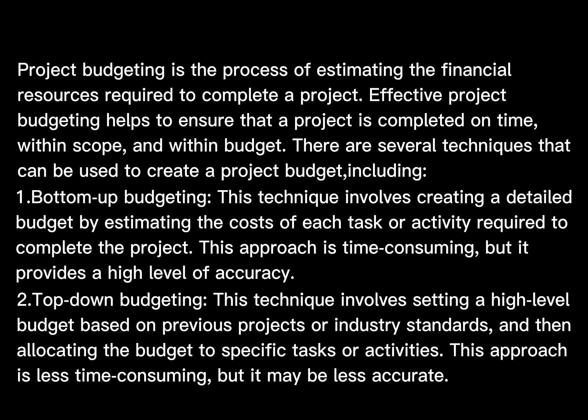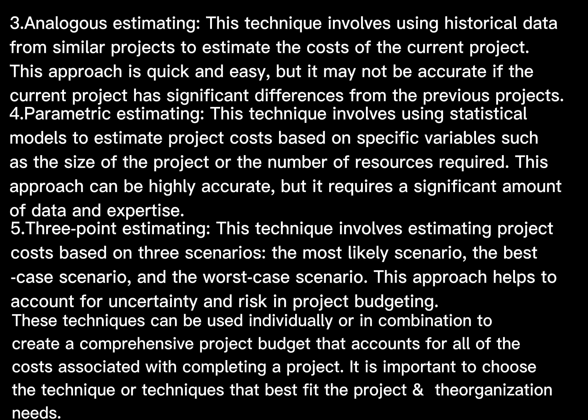2. Top-down budgeting — this technique involves setting a high-level budget and allocating it to specific tasks or activities. This approach is less time-consuming, but it may be less accurate. 3. Analogous estimating — this technique involves using historical data from similar projects to estimate the costs of the current project. This approach is quick and easy, but it may not be accurate if the current project has significant differences from previous projects.